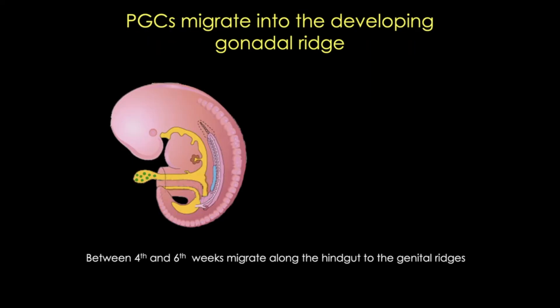So here's that cartoon again. Those primordial germ cells are going to migrate through the primitive streak during gastrulation into the yolk sac. In fact, primordial germ cells are probably the earliest cells to migrate into the embryo during gastrulation. So they migrate in, then they'll move along the yolk sac wall, migrate to the posterior endoderm that forms the hindgut, and from there they'll migrate into the genital ridge. They migrate by amoeboid movement, between four and six weeks of development, and they continue to divide by mitosis as they migrate.